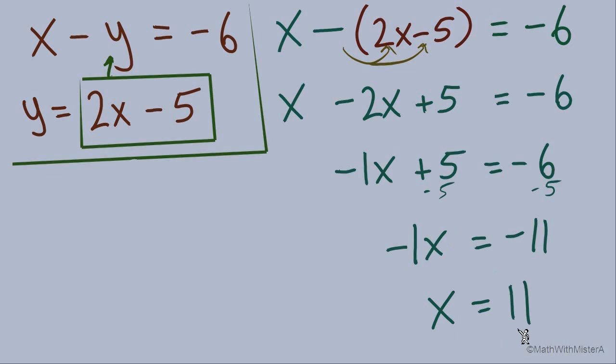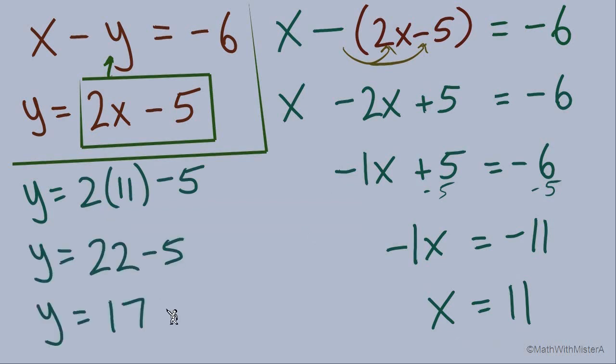Let's continue and find our value for y. Let's go up here: y equals 2x minus 5, so this is 2 times 11 minus 5. Order of operations, we're doing 22 minus 5. Y equals 17.